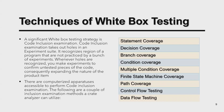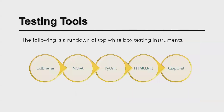White box testing can be performed using different techniques. Statement coverage verifies each and every line of code. Decision/branch coverage verifies from start to end of a branch and checks whether conditions are proper, including passing values to verify accurate results. Multiple condition coverage, finite state machine coverage, path coverage — verifying all paths and navigations — and control flow testing and data flow testing are all part of white box testing techniques.